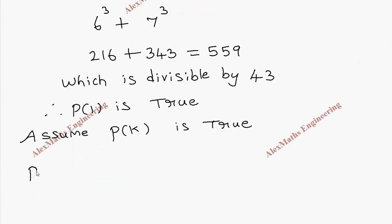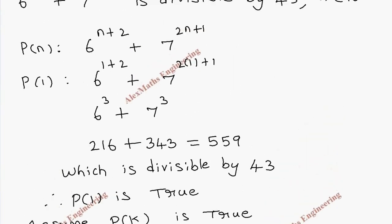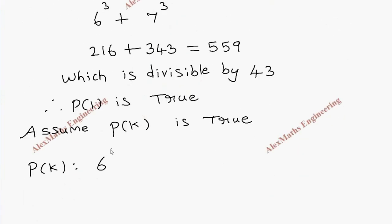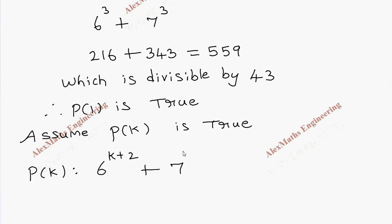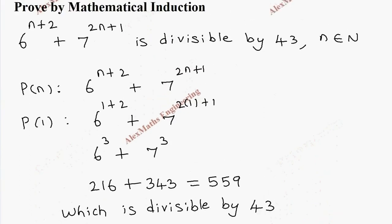Now we assume P(k) is true. So P(k): 6^(k+2) + 7^(2k+1) = 43d, since it is divisible by 43 it will have a multiple of 43.